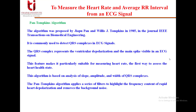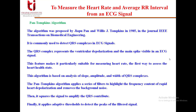The Pan-Tompkins algorithm applies a series of filters to highlight the frequency content of rapid heart depolarization and it also removes background noise. Finally, it squares the signal to amplify the QRS contribution and then applies an adaptive threshold to detect the peaks of the filtered signal. Previously we discussed a similar approach but used a constant threshold of one, whereas here we use an adaptive threshold.